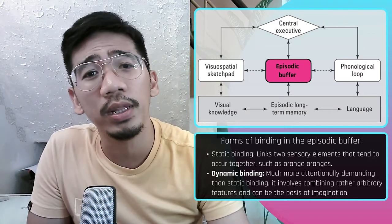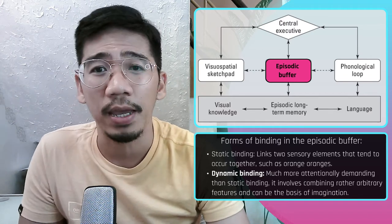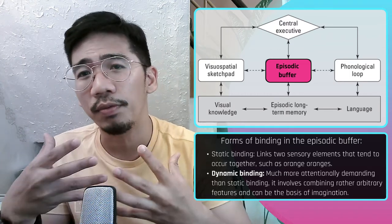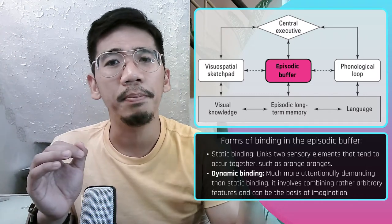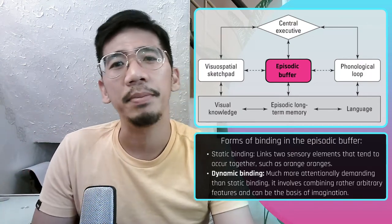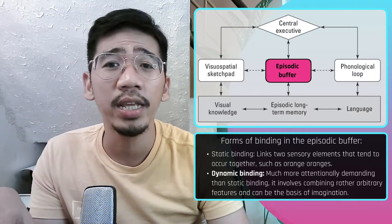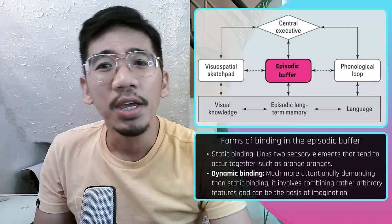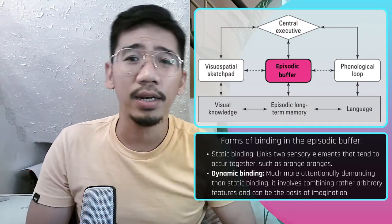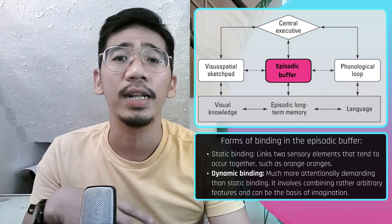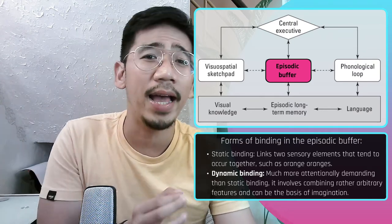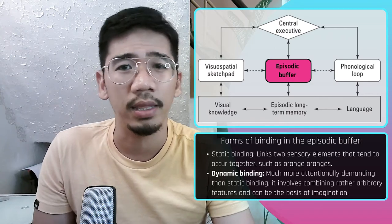The episodic buffer integrates or binds information into discrete episodes in two forms. Static binding links two sensory elements that tend to occur together — such as the color orange and the fruit orange — and seeing the two features together frequently means they become bound as one concept. Dynamic binding is much more intentionally demanding and involves combining rather arbitrary features; it can be the basis of imagination — for example, a pink orange with blue polka dots flying through a green sky with a purple sun.